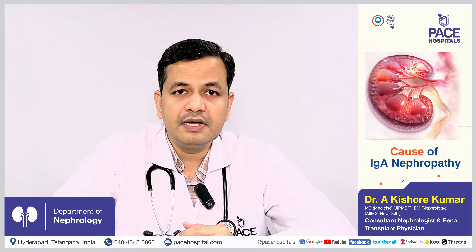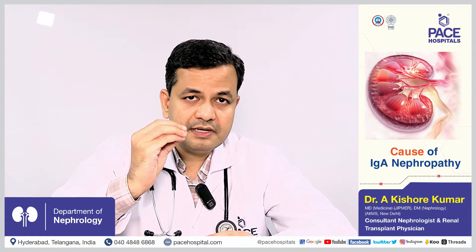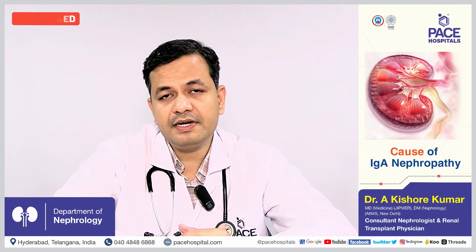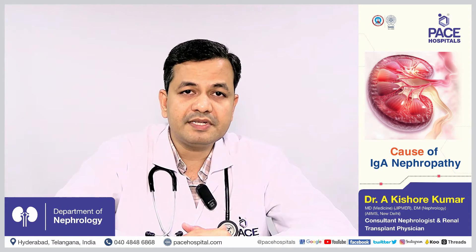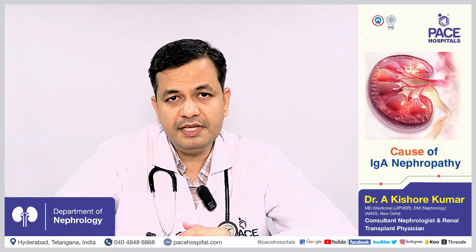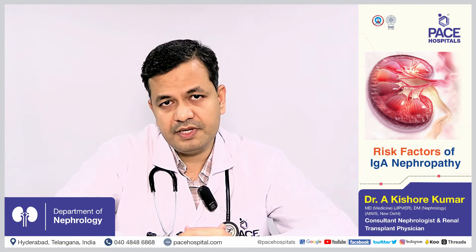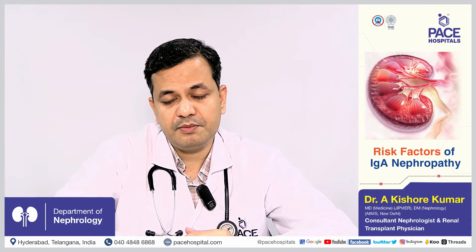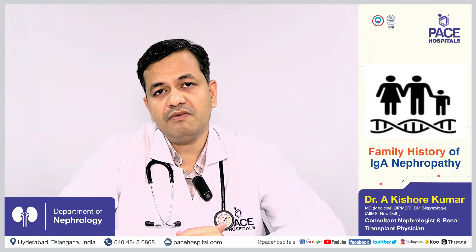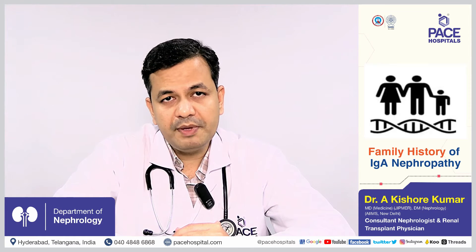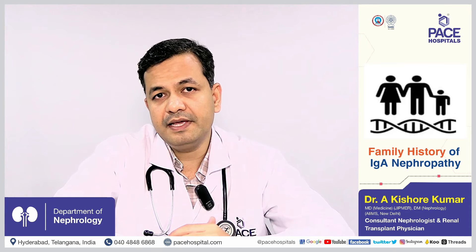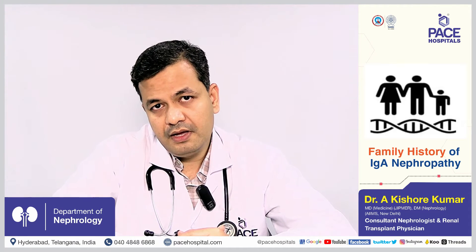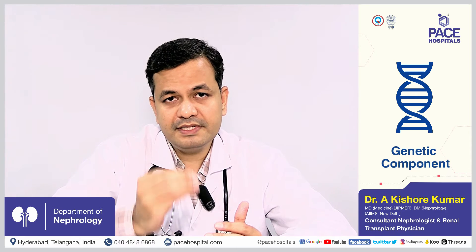Research done to date does not provide a specific cause for IgA nephropathy — we cannot pinpoint one single reason for developing it, meaning any person can be at risk. However, there are a few risk factors. The first is family history of IgA nephropathy: those who have family members with IgA nephropathy are at increased risk, indicating a genetic component to the disease.